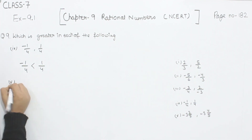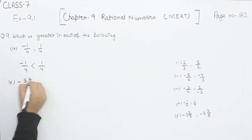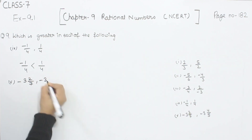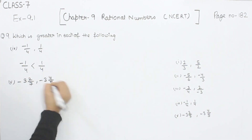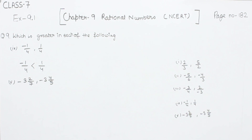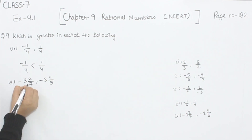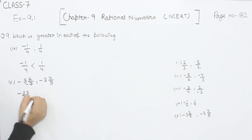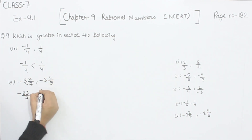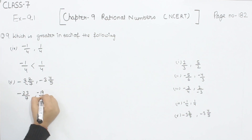Now comes part 5. We have -3 and 2/7, and -3 and 4/5 as mixed fractions. First we are going to convert them into improper fractions. So 7×3=21, and 21+2=23, giving -23/7. And 5×3=15, and 15+4=19, giving -19/5.